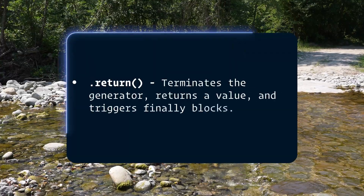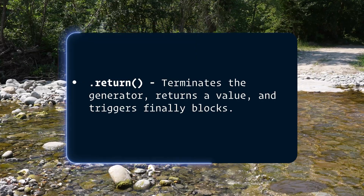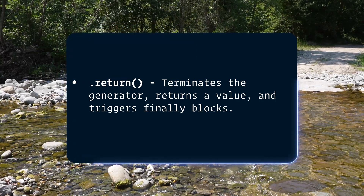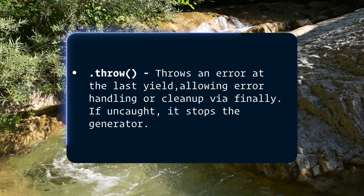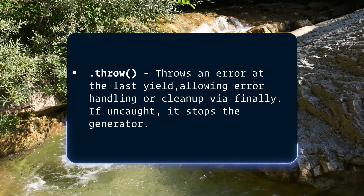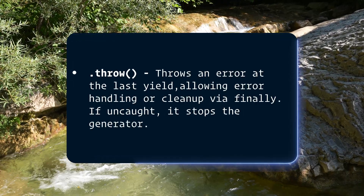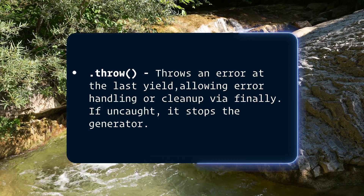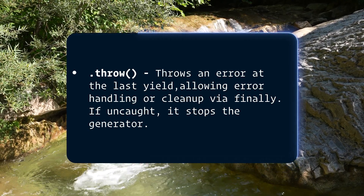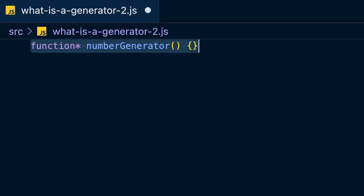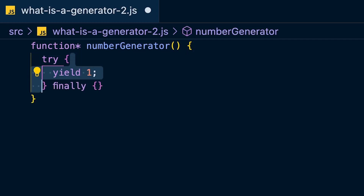Apart from the dot next method, generators also have a 'return' method and a 'throw' method. The return method terminates the generator's execution and returns the specified value, also triggering any finally blocks. The throw method allows you to throw an error inside the generator at the point of the last yield, which can be caught and handled, or allow the generator to clean up through a finally block. If uncaught, it stops the generator and marks it as done.